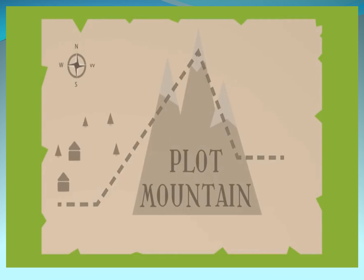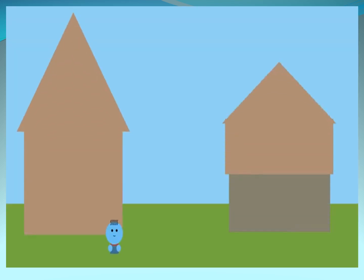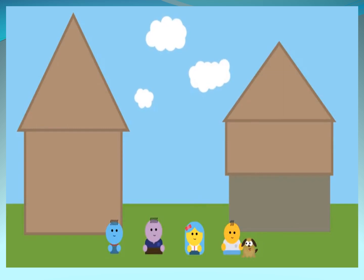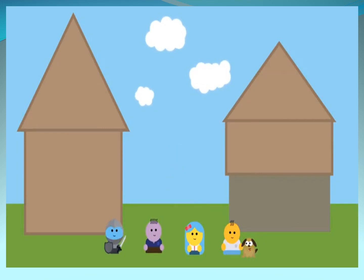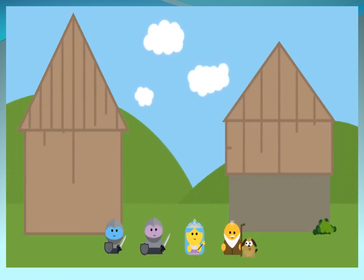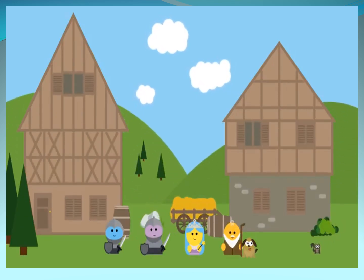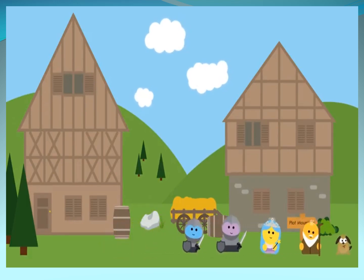The characters are the people in the story — what do they look like, why should we care? And the setting is the place where they are. What exactly do the characters see on their way to Plot Mountain?